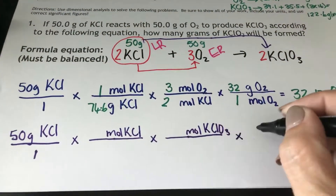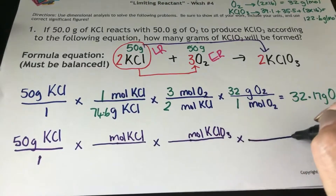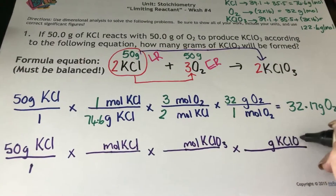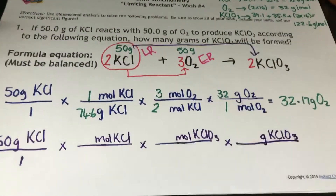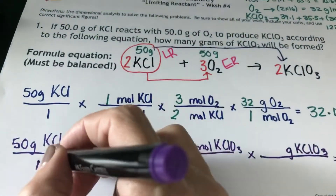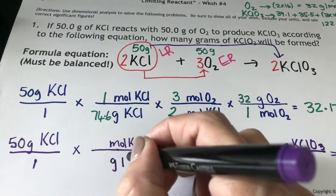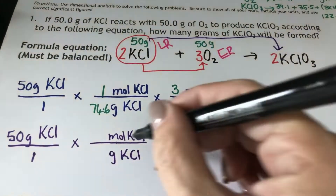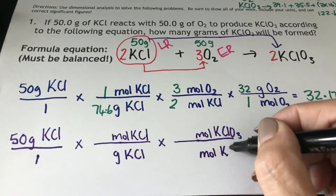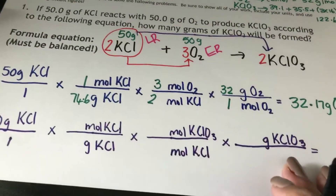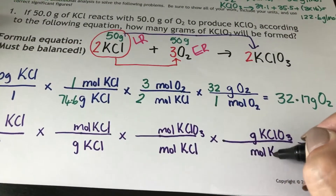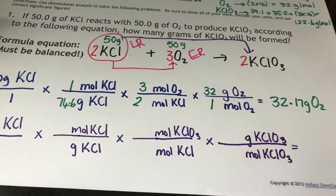When I know how many moles of potassium chlorate I'm going to use, I can then find out how many grams of potassium chloride are going to be produced in this chemical reaction. If I've got grams of potassium chlorate on top, I must have grams of potassium chlorate at the bottom. Moles of potassium chlorate on top, moles of potassium chlorate at the bottom. Now be very careful with this one because potassium chlorate and potassium chloride can look very similar.